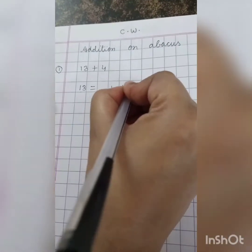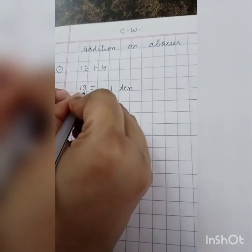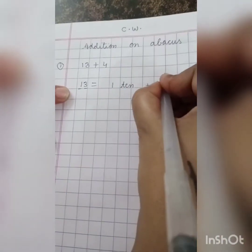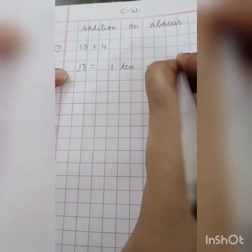1, 10. How many tens are there? 1 ten is there and 3 ones. So we will write 1 ten plus 3 ones.